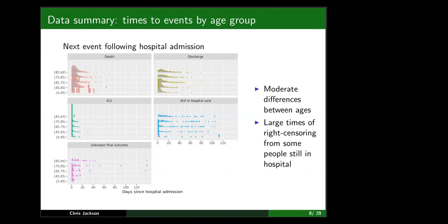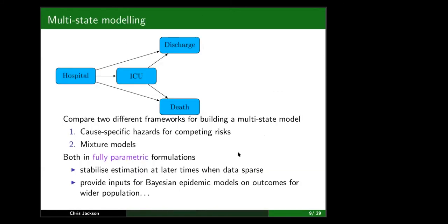You'll see the consequences of that for the statistical modelling later on. Essentially there's large right censoring and a big unknown tail, with some moderate difference between age groups in terms of times to events, though not massive compared to the differences in probabilities of the events.